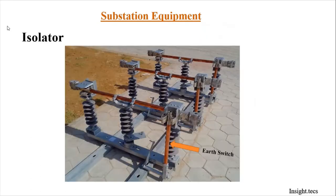This is how an isolator looks. The horizontal blades are the main isolator blades, which are opened to isolate any equipment from the power system. The vertical blades provide earthing, and earthing is only provided once the isolator blades are opened.